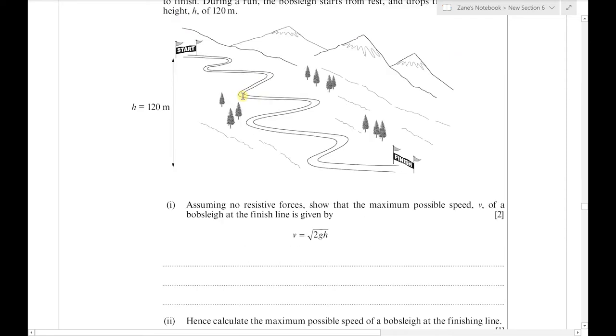Assuming there are no resistive forces, we've got to show that the maximum possible speed of the bobsleigh at the finish line is given by v equals root 2gh. This is an energy question. As the bobsleigh goes down the hill, its gravitational potential energy transfers to kinetic energy at the bottom.